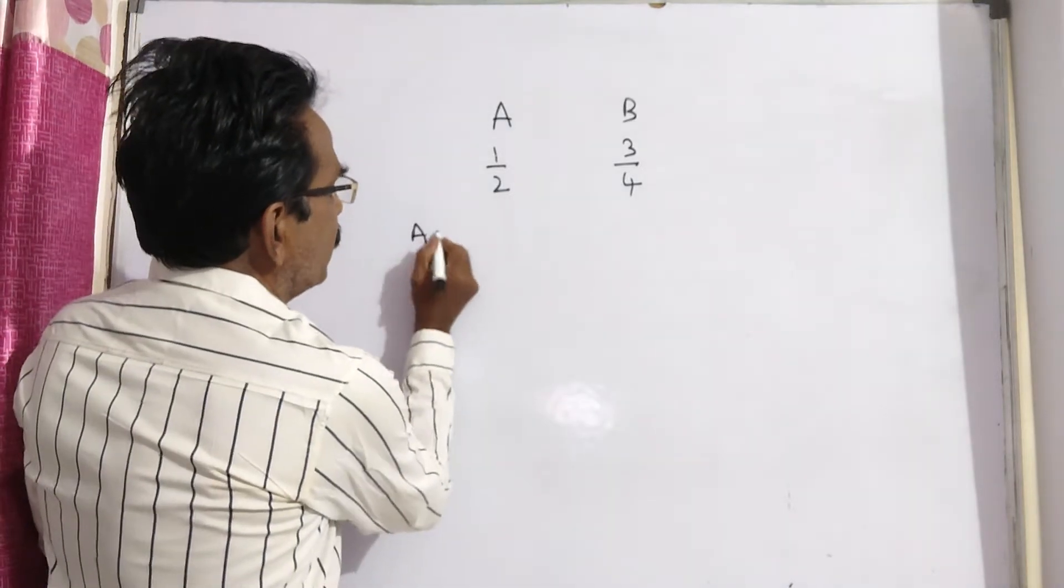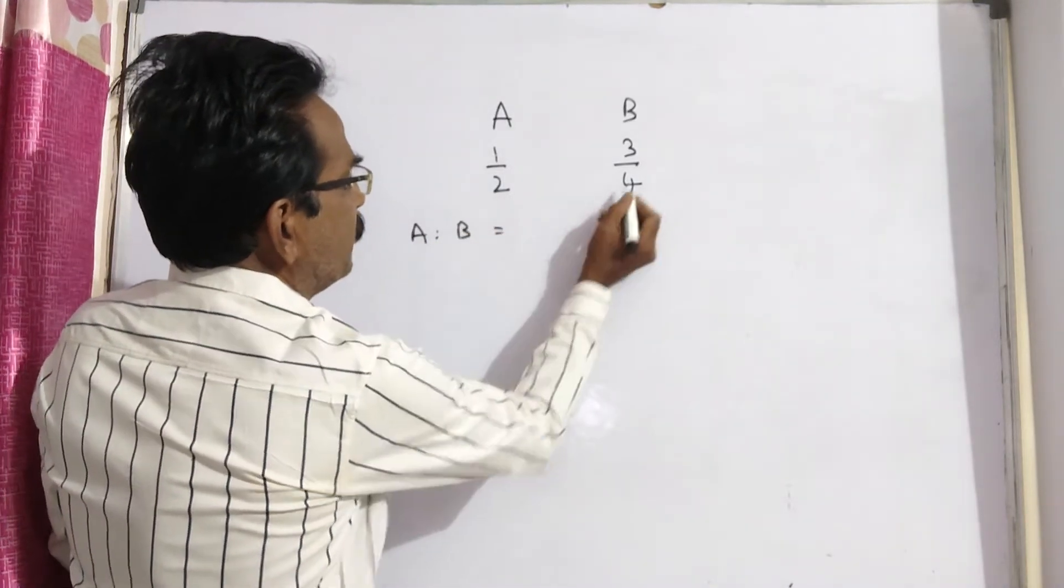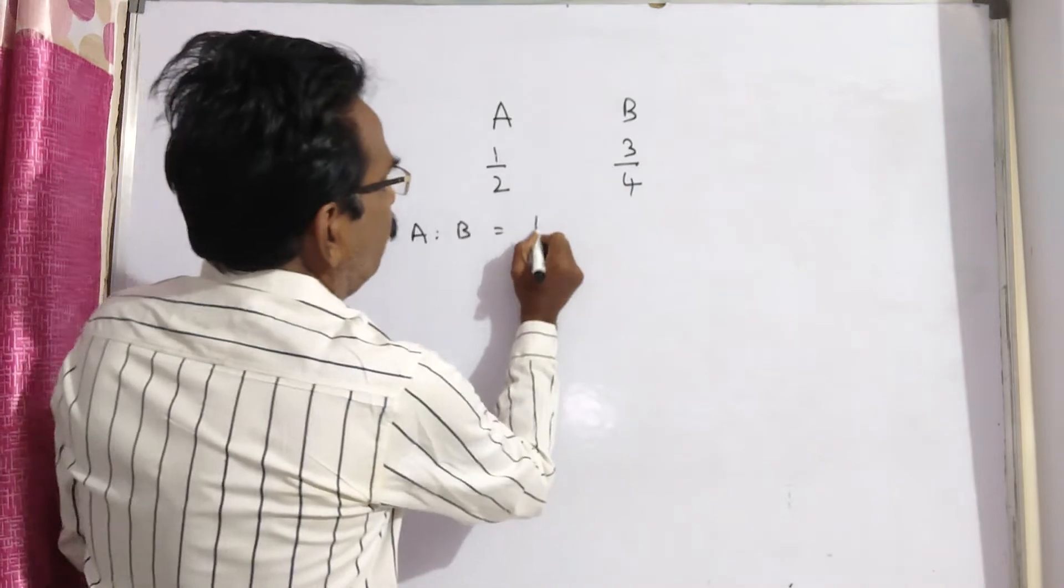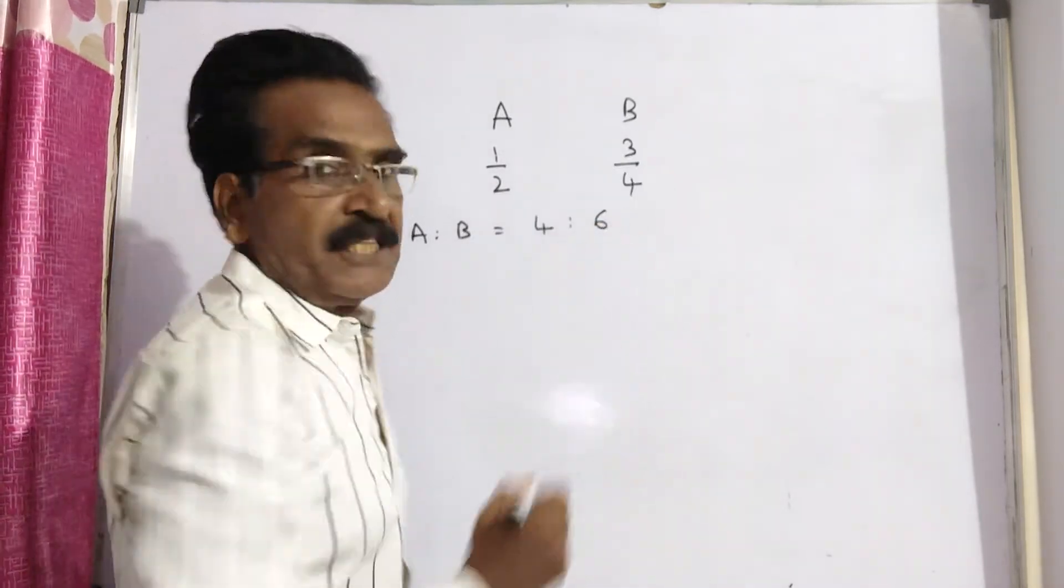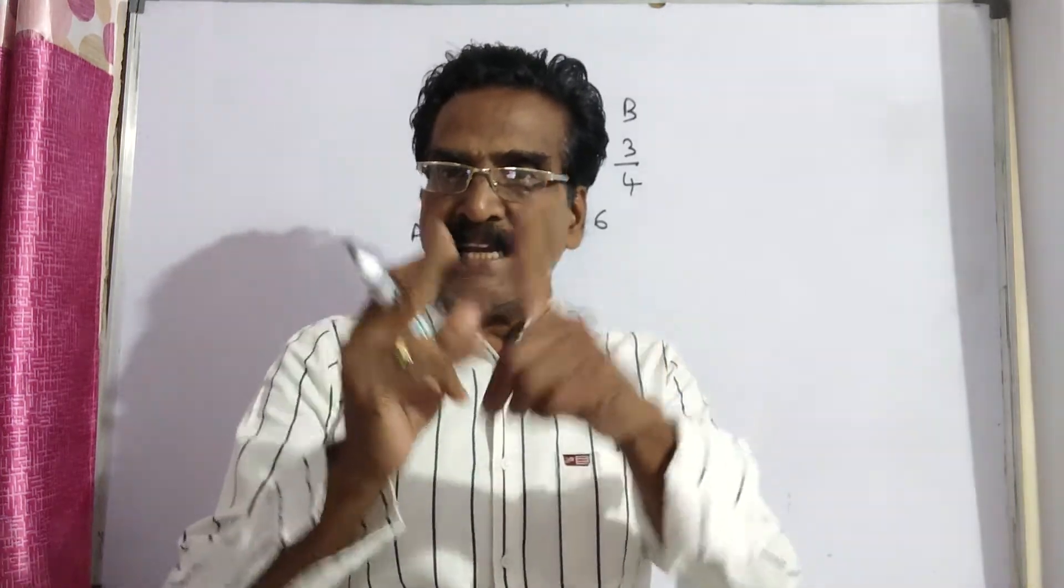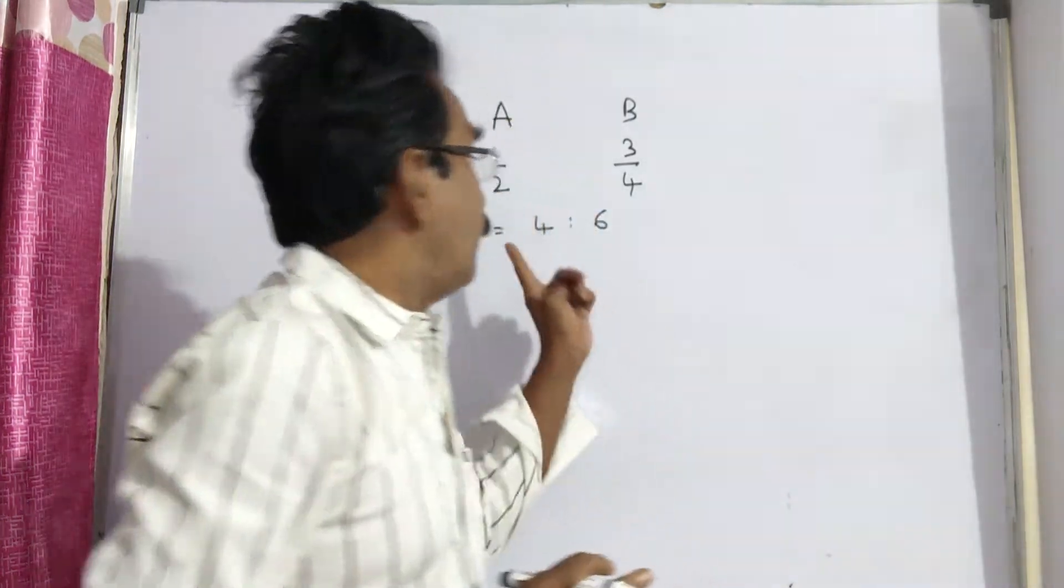So their efficiency ratio is equal to 4 into 1, 4 is to 2 into 3, 6, 4 is to 6. Now let us divide the total work done by A plus B in one day in the ratio 4 is to 6.